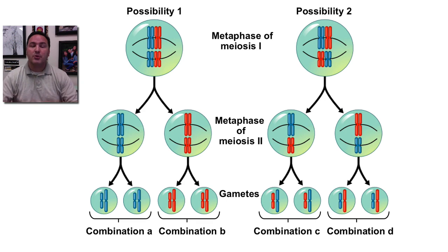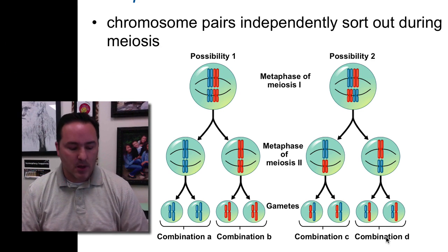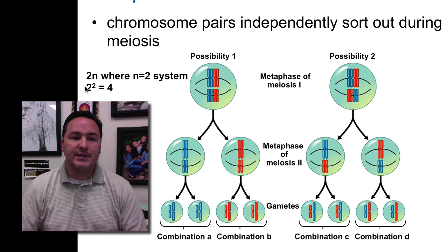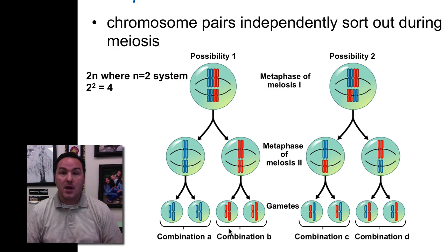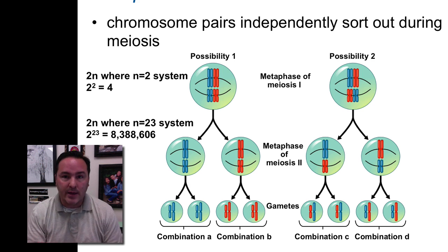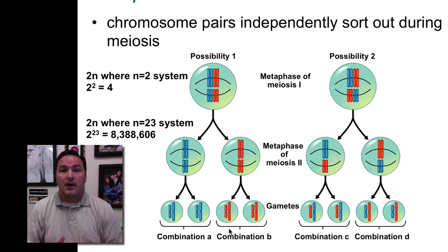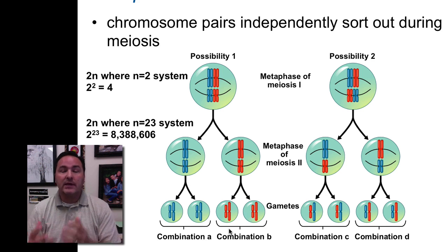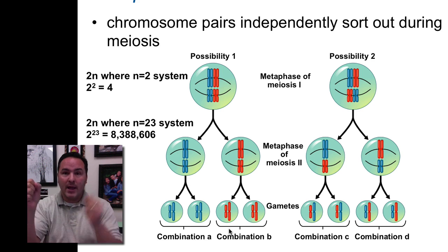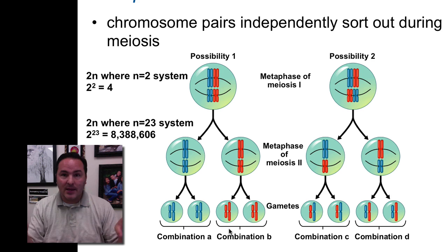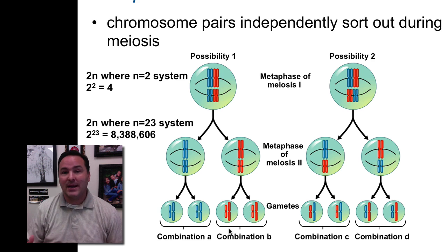This is important because it produces variation — lots of different kinds of eggs and sperm. For a system with only two pairs of chromosomes, it's 2² = 4 different combinations. But for humans with 23 pairs of chromosomes, it's 2²³, which means over 8,388,606 possible gametes. This is why you never see identical siblings from two independent fertilization events. Identical twins can be identical, but that's one fertilization event — one egg and one sperm — and the initial zygote splits into two.